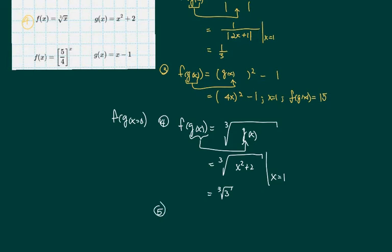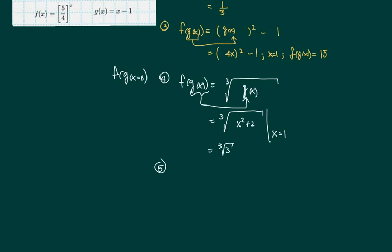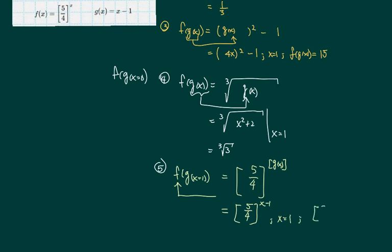Okay, last one. The last one, we have g of x, f of x, f of g of 1. Again, we'll follow f form first. f form says 5 over 4, whatever form you give me, and this happened to be g of x. So this is 5 fourth, g of x is x minus 1, and you value the x equal to 1. Then we have 5 fourth to the 0, which is equal to 1.